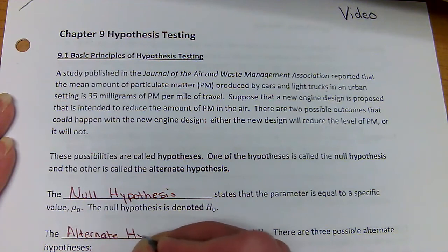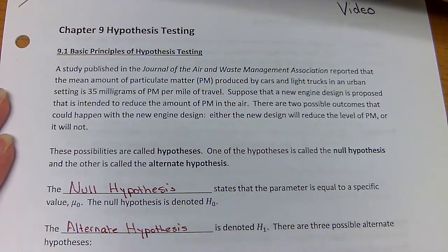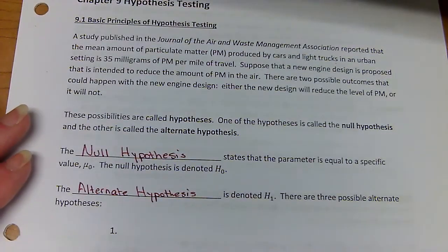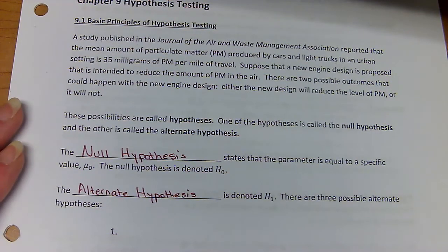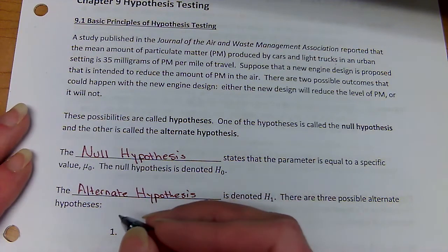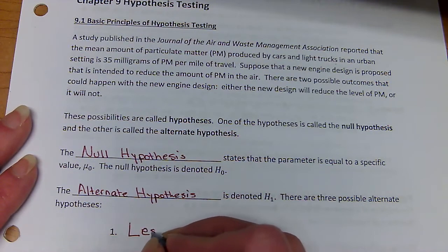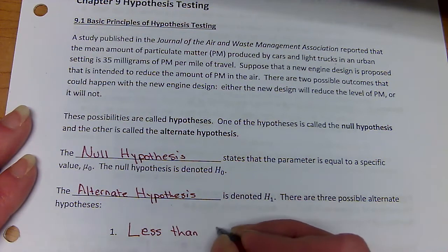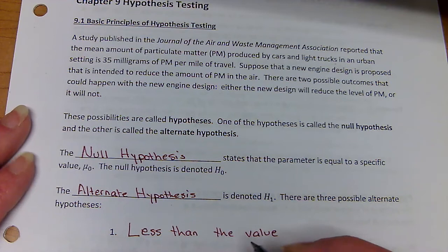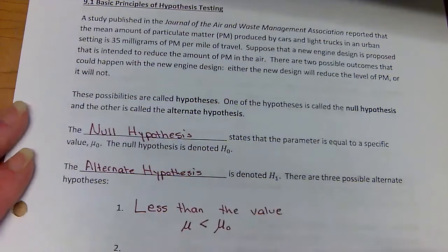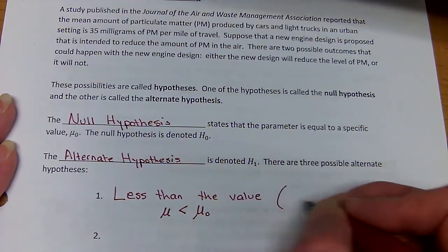The alternative hypothesis, denoted with H₁, is the alternative to that, and there are really three alternatives. The first one is that our true mean is less than the null value. We call this a left-tail hypothesis — less than means left tail.